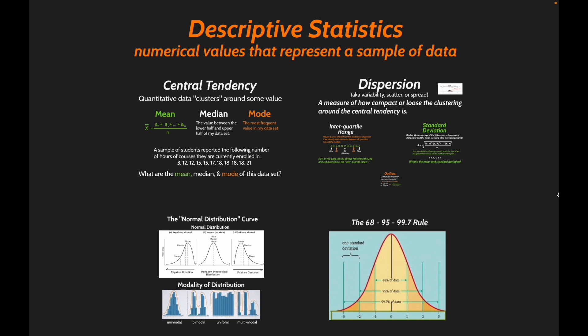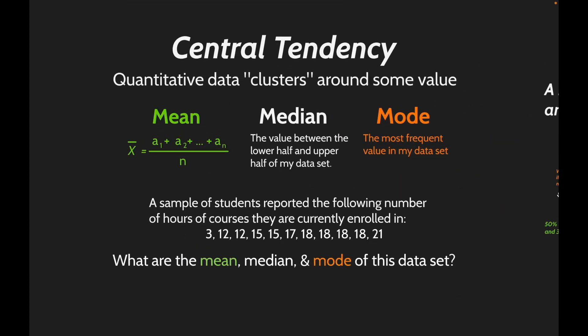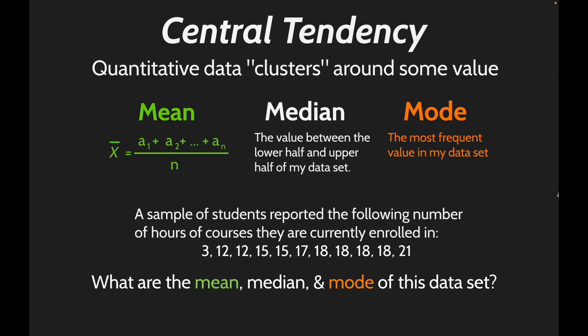There are two elements of descriptive statistics I want to cover: central tendency and dispersion. Central tendency refers to the way quantitative data can cluster around some value — the 'center of gravity' of a data set. While people often say 'average' when they mean the mean, let's be precise. The mean adds up all data points and divides by the number of data points.